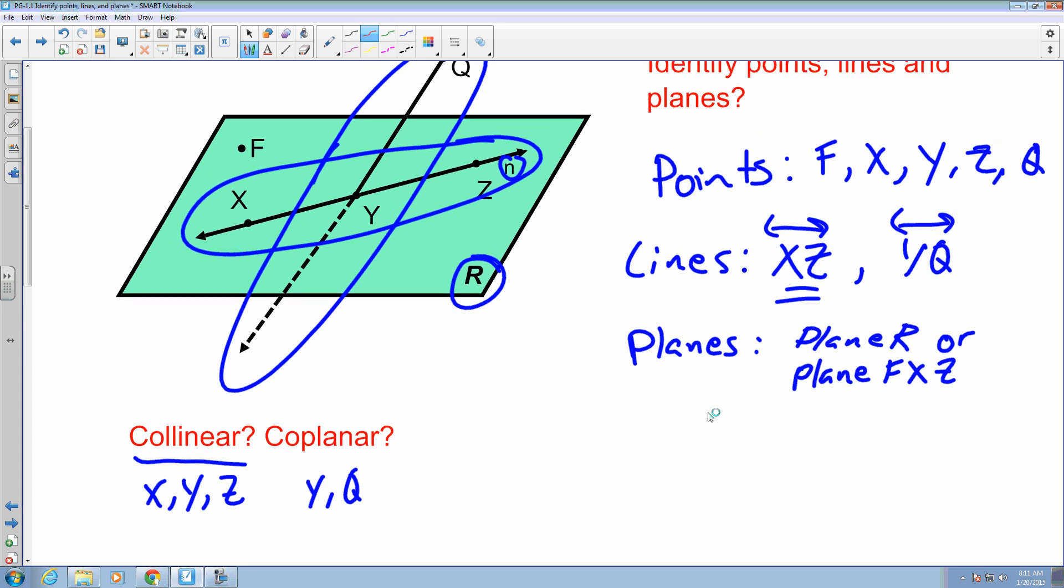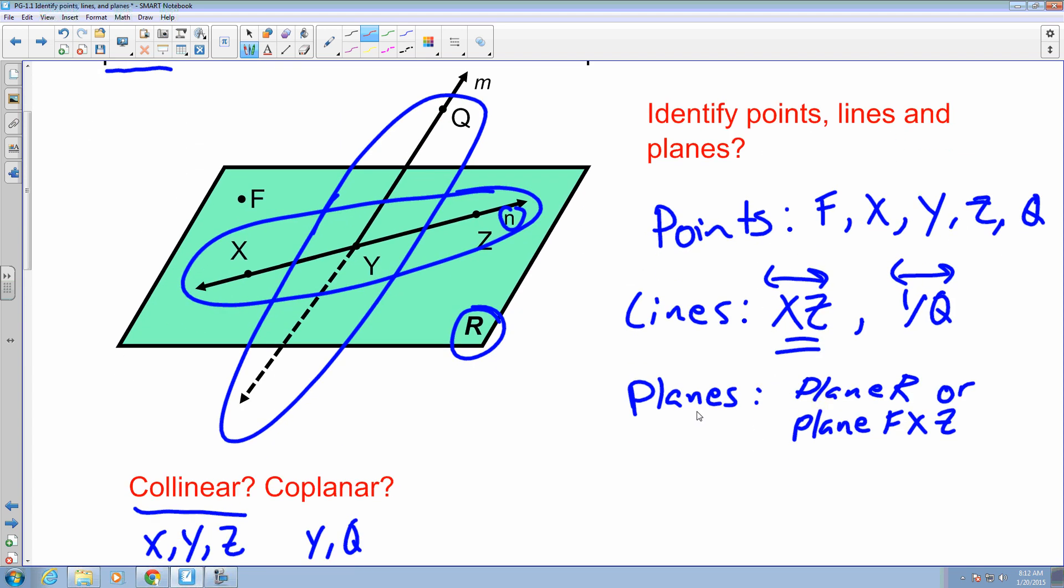If I were to look at coplanar points, I have all the points that lie on the plane. Now, it looks like for coplanar points here I can say that point X, point F, point Y, and point Z are all points that lie on the plane. Now, the one that does not is point Q. Point Q is not on the plane or it's outside of it or on top of it.